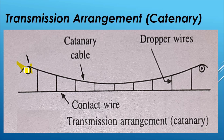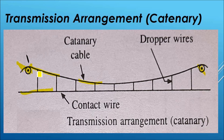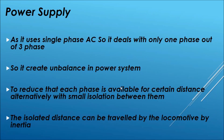This is the catenary arrangement. When you connect a wire between two poles it creates sag, which causes irregularity in contact. So the contact wire is kept very straight by being hung from dropper wires at very short intervals, creating a straight-line path that allows the pantograph to touch smoothly.